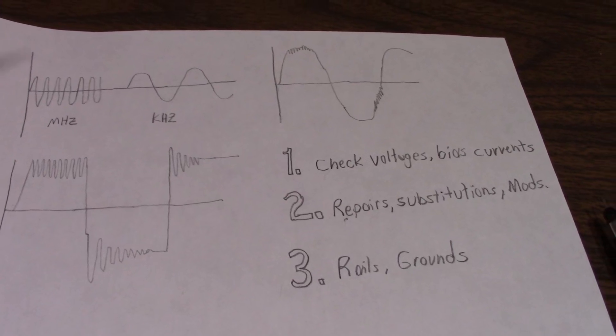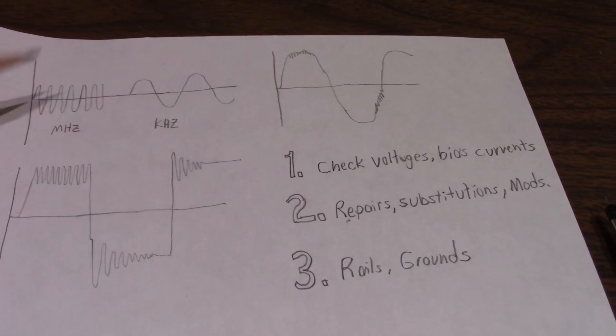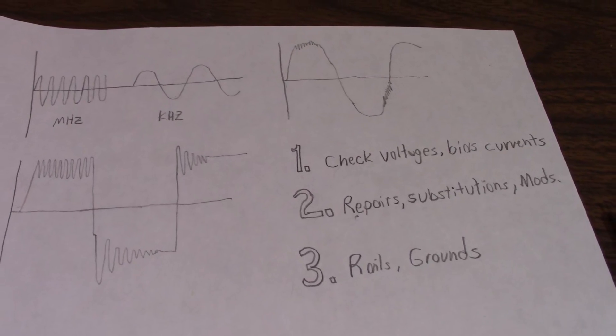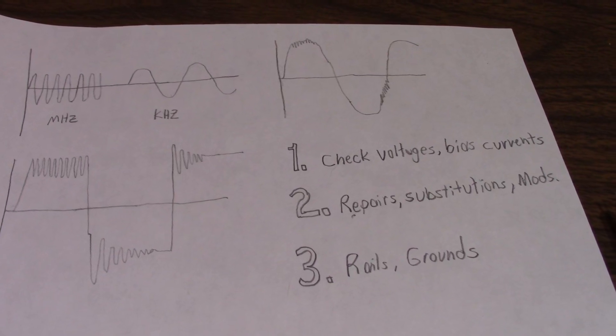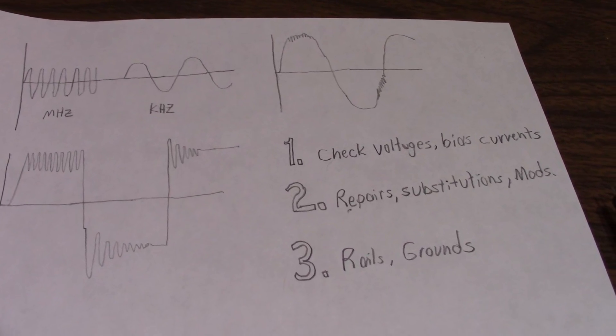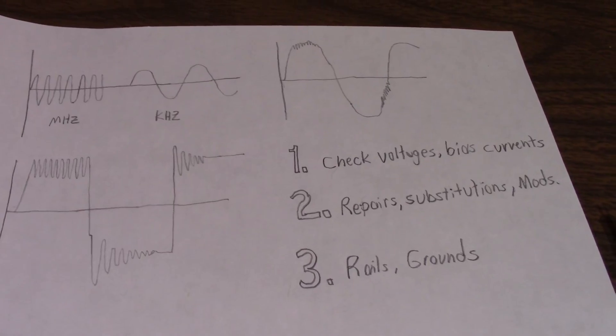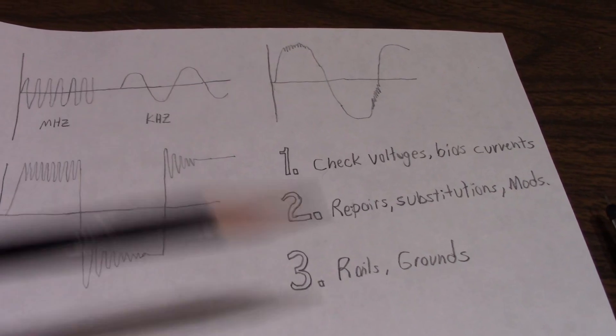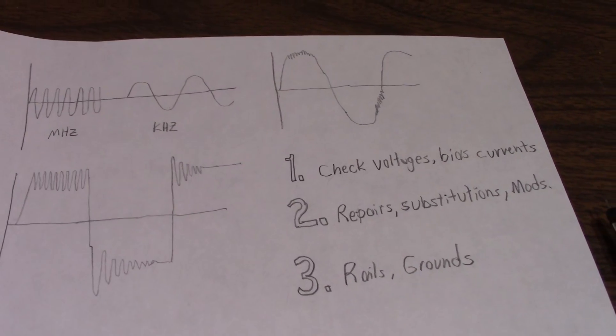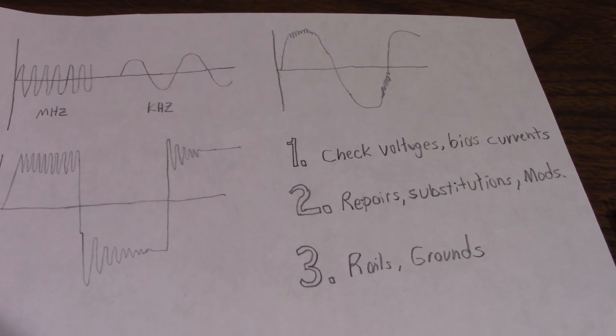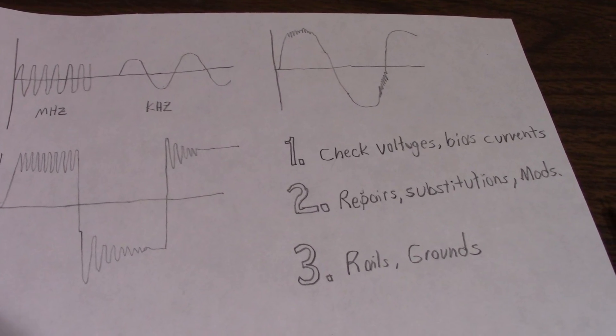So there you have it. There's some things to look for if your amplifier you're servicing is oscillating. Like I said, I can't be too specific on things, because all the different types of circuits that are out there. Of course, you want to apply your technician skills when checking the amplifier. Like I always say, scope those rails. Check those voltages, scope those rails. And with that, we'll wrap it up here. And thank you for watching.